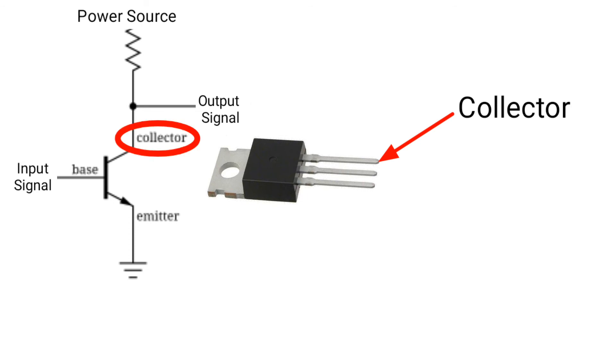The collector section of the transistor is moderately doped but larger in size so that it can collect most of the charge carrier supplied by the emitter.